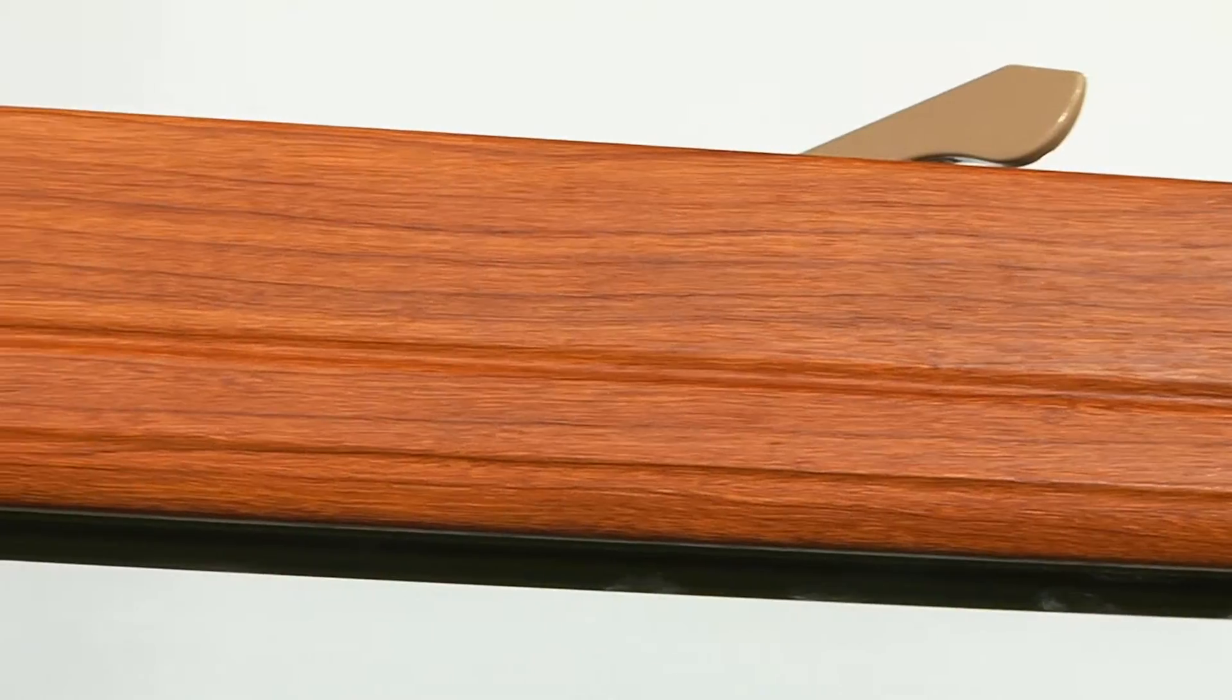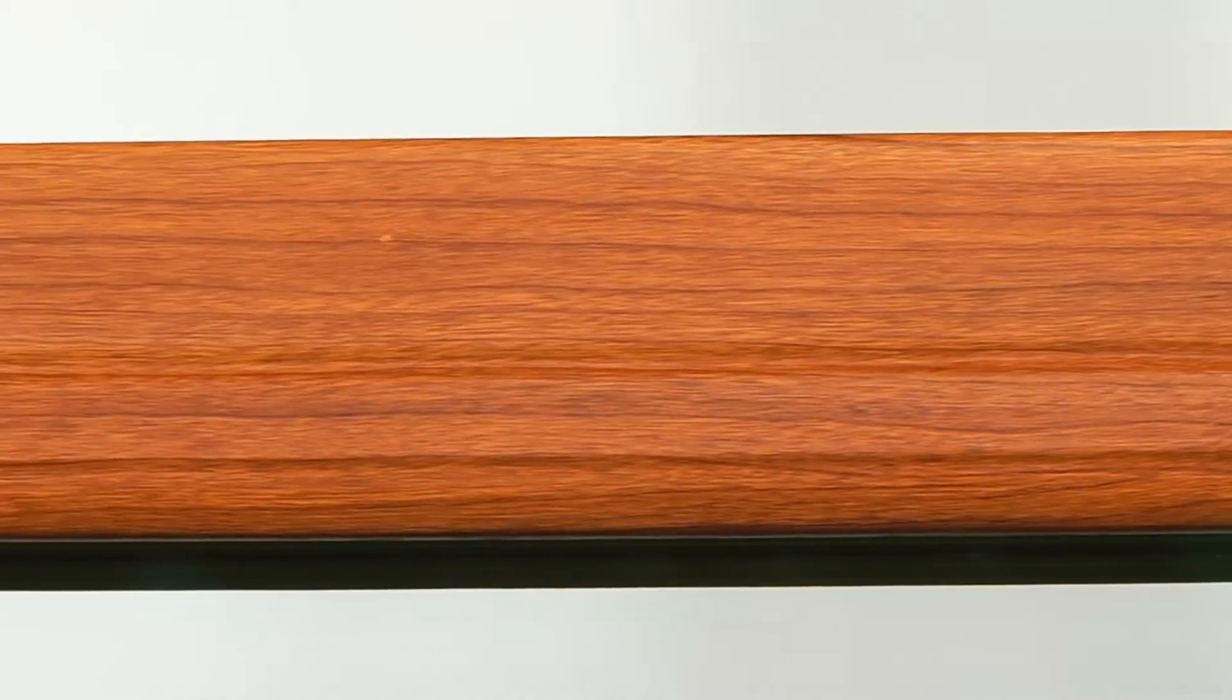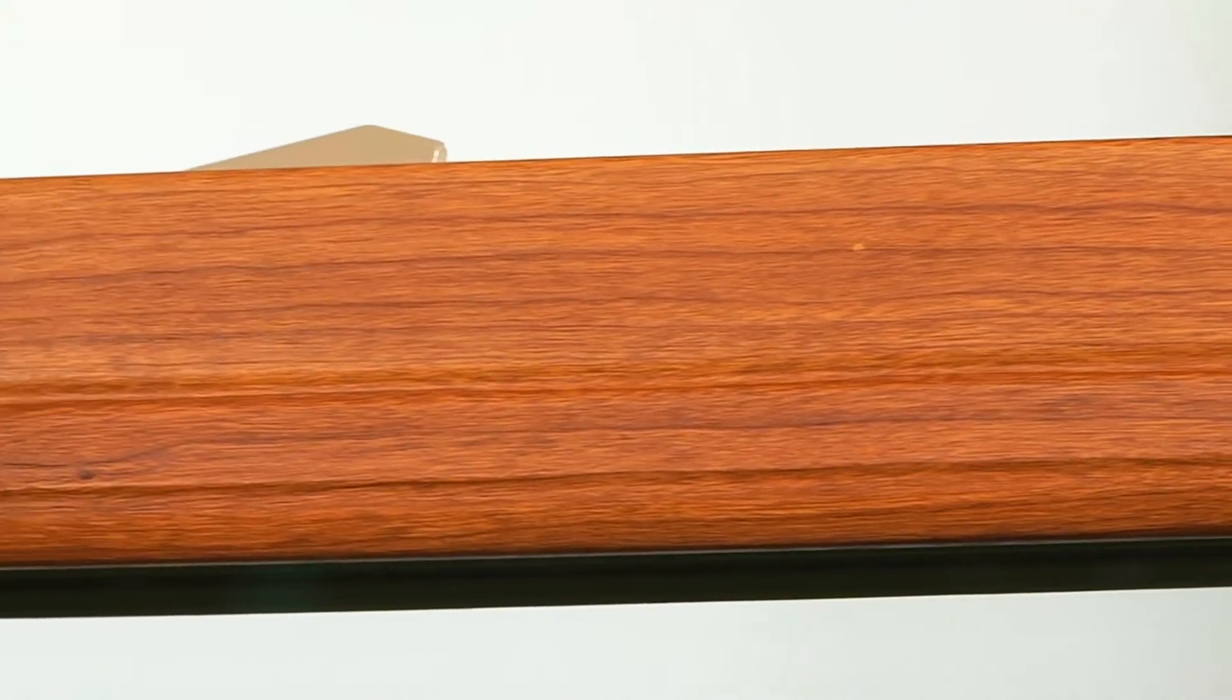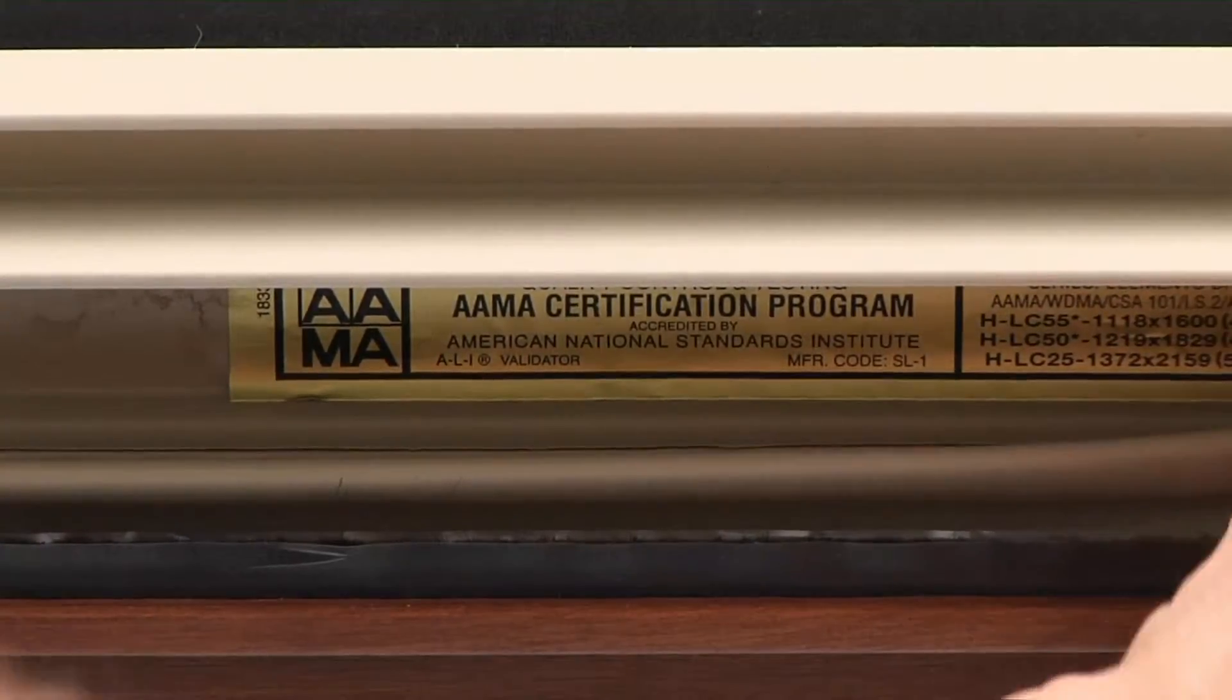The master frame and sash contain multi-chambered structural walls that are over 40% thicker than the average vinyl window. Q-Lon compression weather stripping used to insulate most refrigerator doors is also used to seal the i-Series double-hung for maximum draft protection.